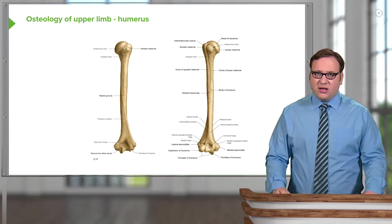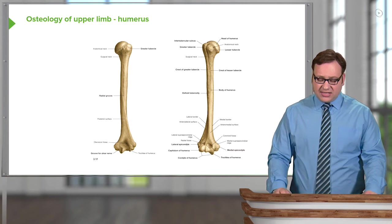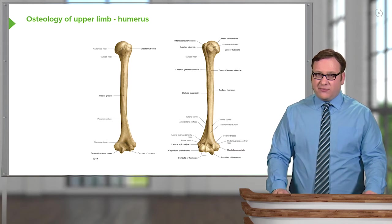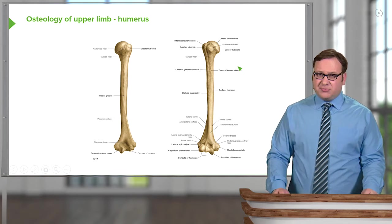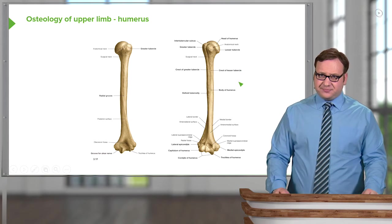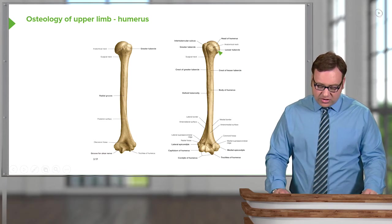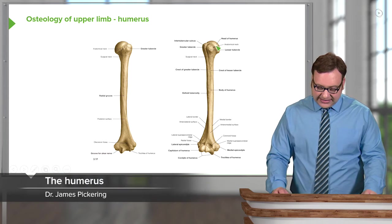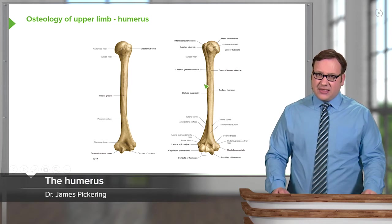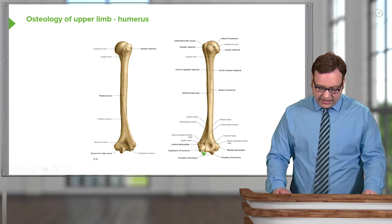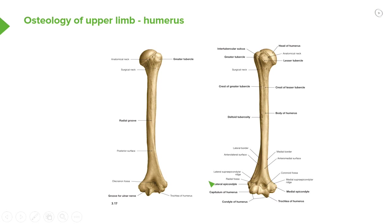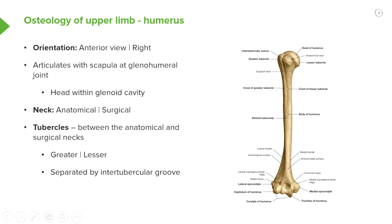Now let's move to the humerus, this long bone that sits within the arm of the upper limb. It attaches proximally via the head of the humerus to the scapula and articulates distally at the elbow joints with the ulna and the radius. Here we can see both an anterior and a posterior view on the slide.